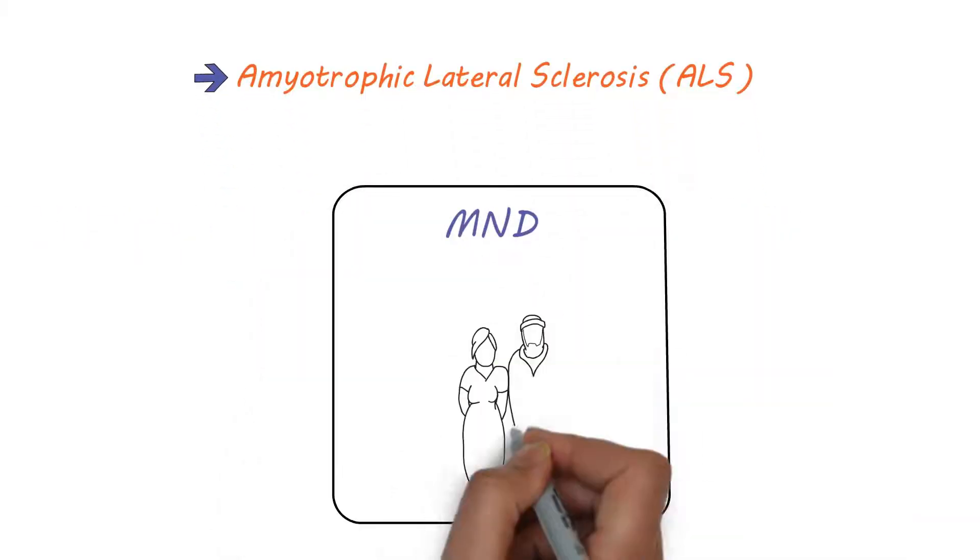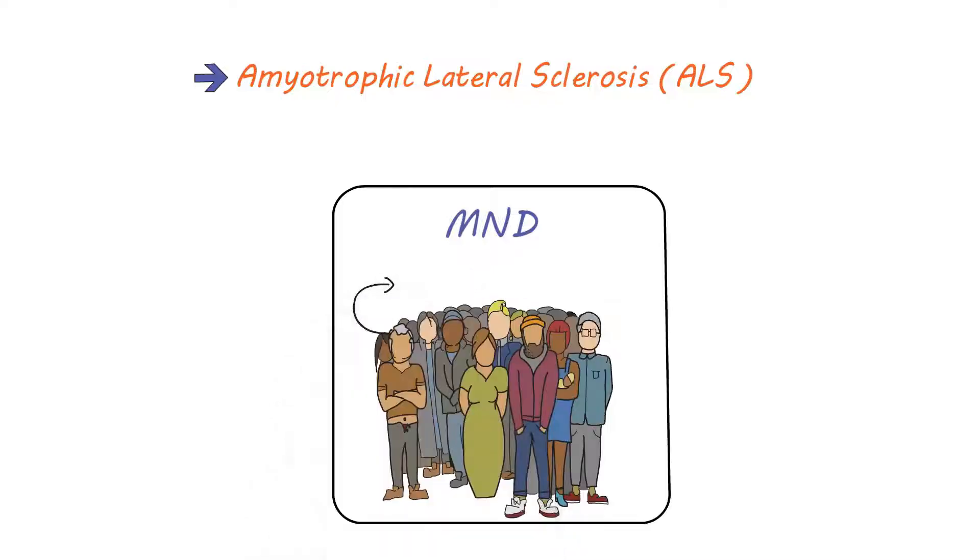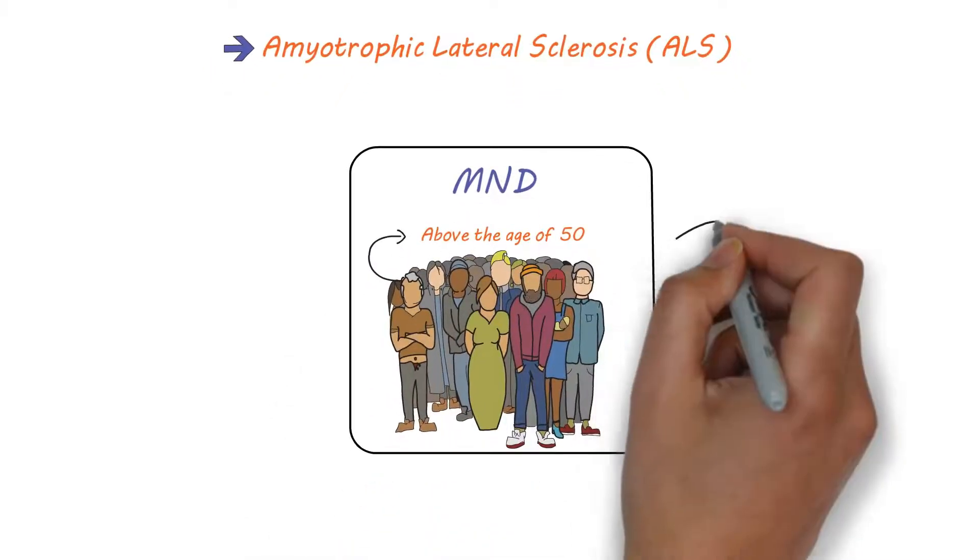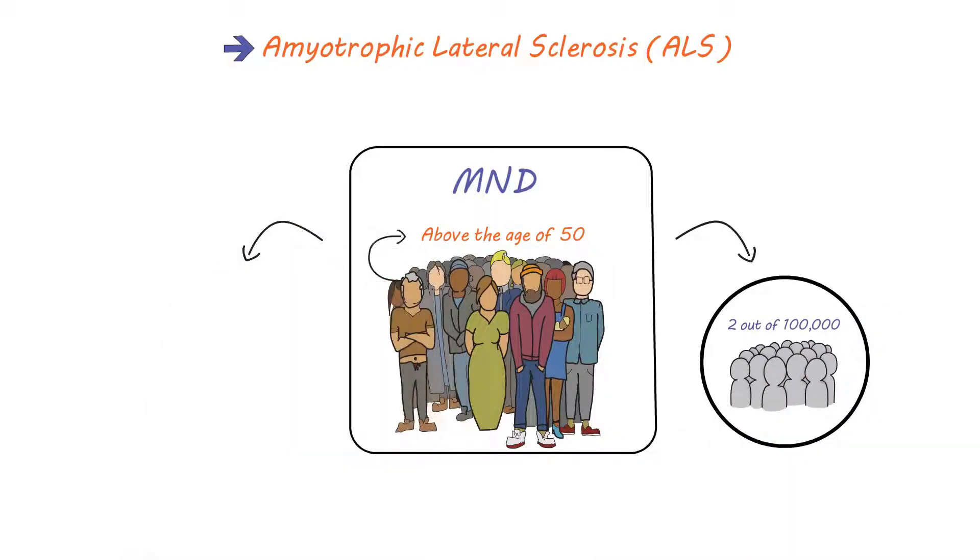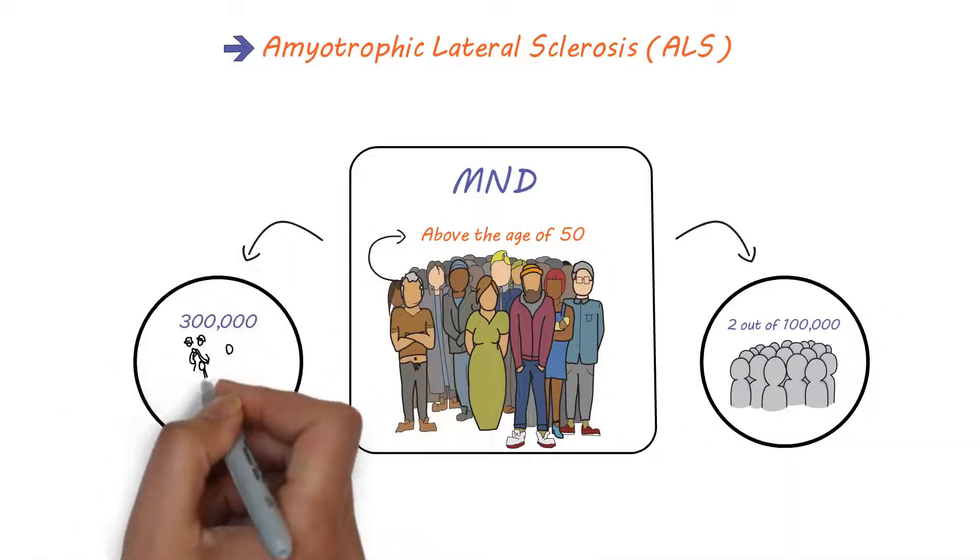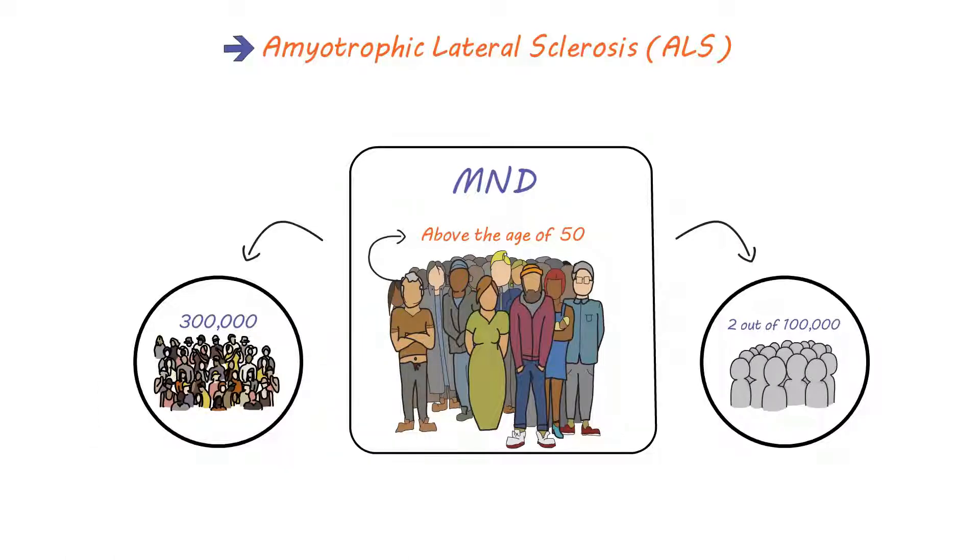MND is a rare condition that can affect anyone but usually develops above the age of 50. Around 2 out of 100,000 people develop the disease every year, and it is estimated that around 300,000 people around the world are currently living with this disease.